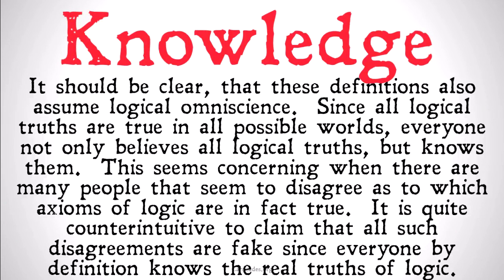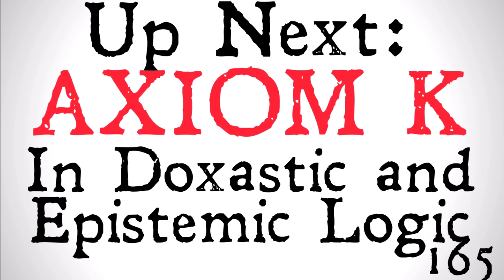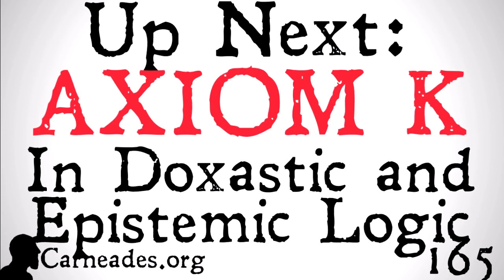It should be clear that these definitions also assume things like logical omniscience. Since all logical truths are true in all possible worlds, everyone not only believes all logical truths but knows them. This seems concerning when there are many people who disagree as to which axioms of logic are true. It's quite counterintuitive to claim that all such disagreements are fake, since everyone by definition knows the real truths of logic. We'll talk more about logical omniscience in a later video. There are other concerns relating to justification and implicit beliefs, but for now we're moving on to a better understanding of the syntax of these systems. Up next: Axiom K in doxastic and epistemic logic. Watch a new video every single day for 100 days at carneades.org, and stay skeptical, everybody.